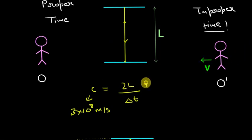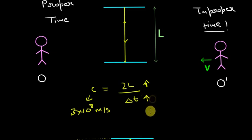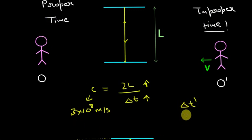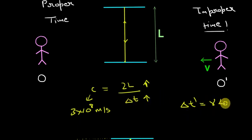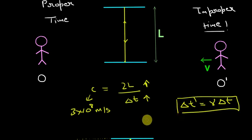This distance is increased in the second frame. To keep c constant, the time must also increase. So the improper time delta t dash should be greater than the proper time delta t. Delta t dash is equal to some factor gamma multiplied by delta t, where this factor gamma is greater than 1 — meaning delta t dash is greater than delta t. This is simply the time dilation formula.